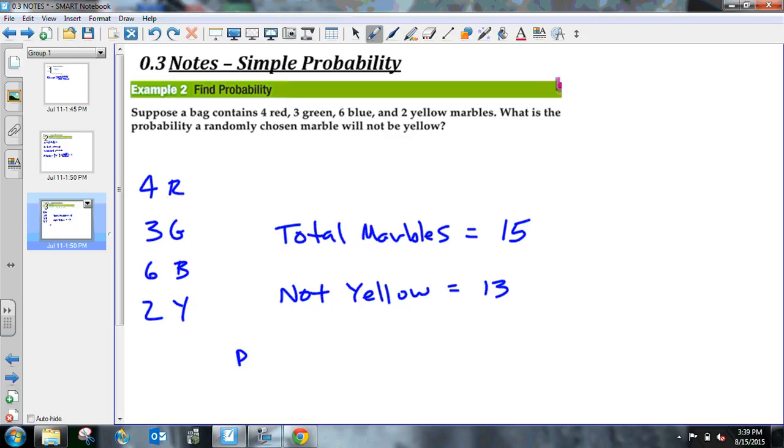If I were to write this out in probability notation, I would say P(not yellow) is simply going to be my expected outcome, which is 13, out of the total amount, which is 15. So 13 divided by 15 as a decimal comes out to about 0.86 and the 6 repeats. As a percentage, that's going to be 86.6% and the 6 repeats.